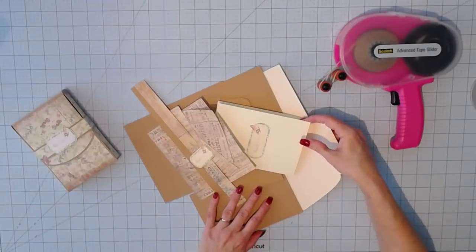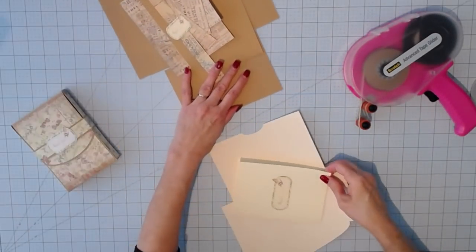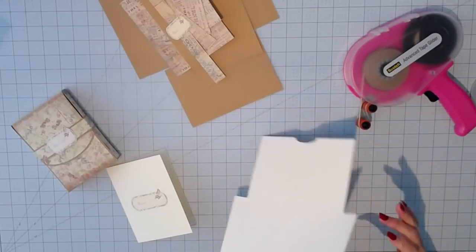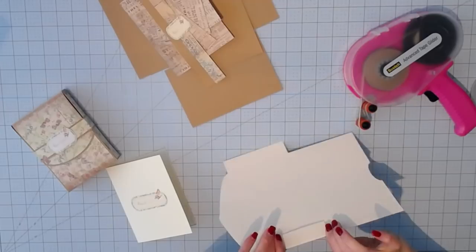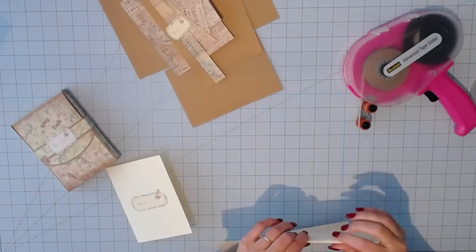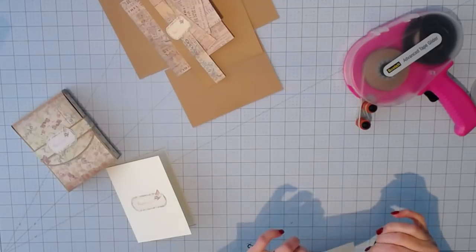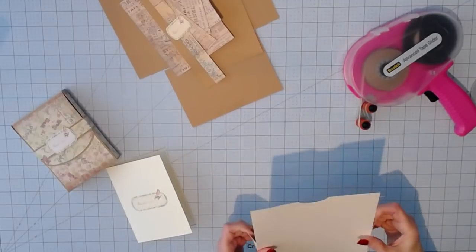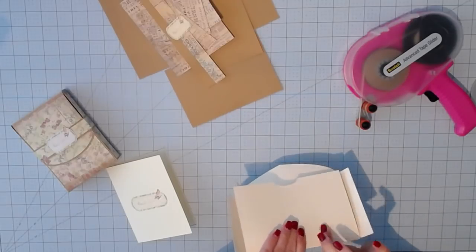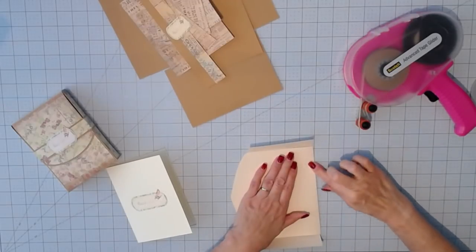The first thing we're going to do is assemble the envelope that I've included in this file. You need only fold the score lines. It's all in one piece. So fold the side tabs in. You're going to fold the middle of the card, folding up, and you're going to fold the flap.